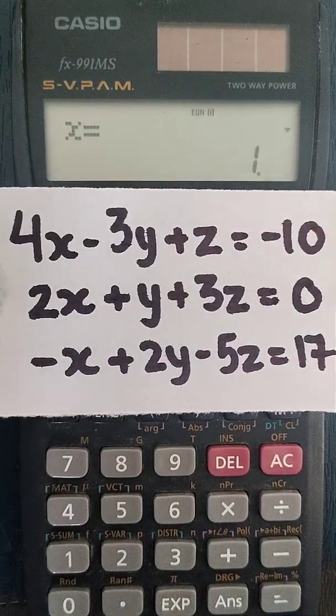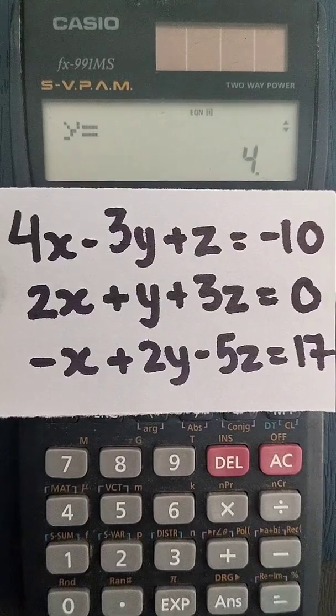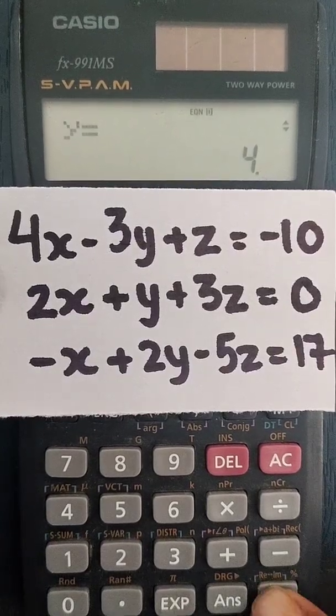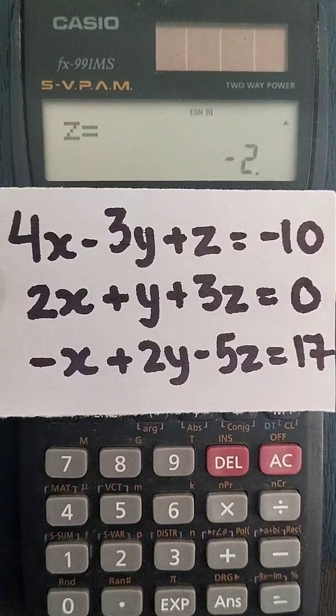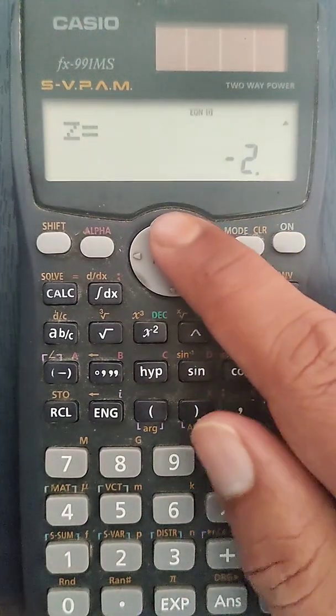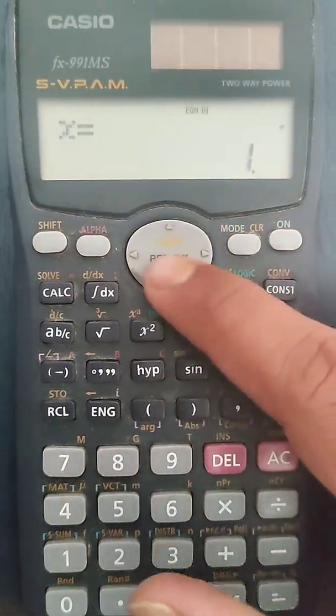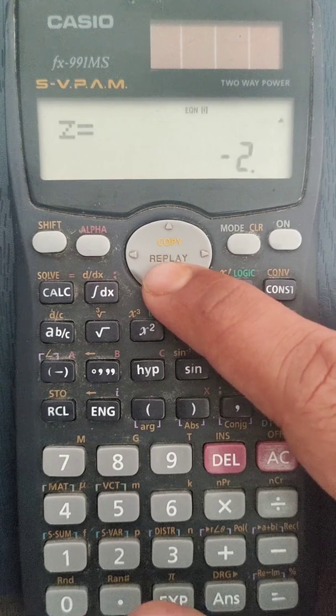So the values of unknown variable x will be 1, y will be 4, and z will be minus 2. So this is the solution for the equation. You can again go back to look into the values: x equals to 1, y equals to 4, and z equals to minus 2.